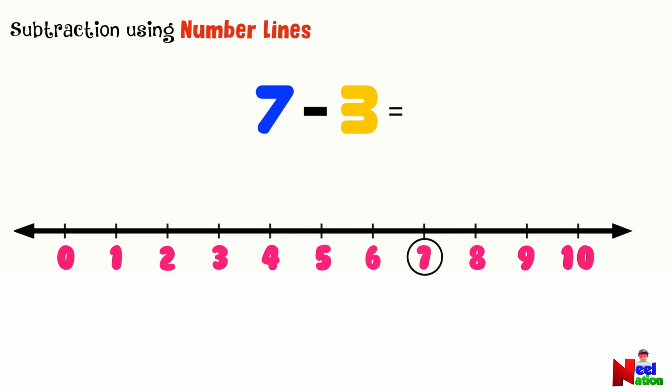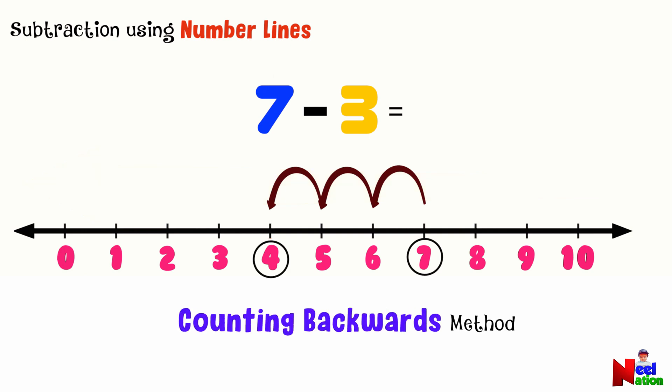To take 3 away from 7, we make 3 jumps to the left. So it is 6, 5, 4. So we landed on 4. So when we take 3 away from 7, we get 4. This is called counting backwards method.